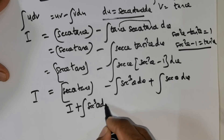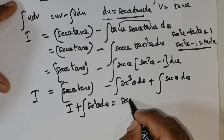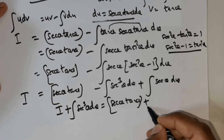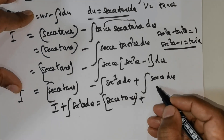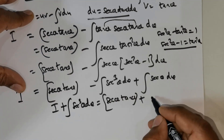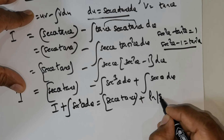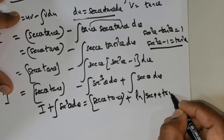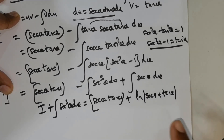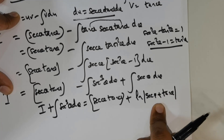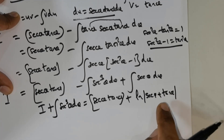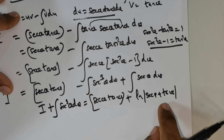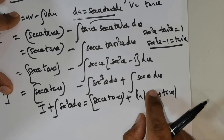So 2I is equal to secant theta tan theta plus integral of secant theta, which is ln|secant theta plus tan theta|. We know this by formula. If you are not sure how to evaluate this integral, I have put a link — please watch that.